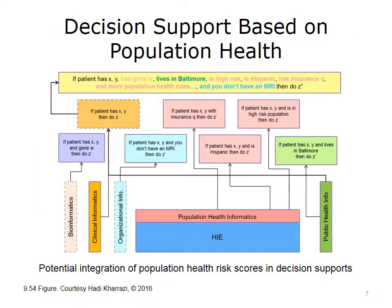Population health predictive models and risk scores can potentially also be used in the decision support process. This diagram shows how different data sources and different informatics domains can provide different levels of decision support at the point of care. HIEs can provide certain population health risk scores for individual patients at the point of care that can help clinicians to make better judgments.